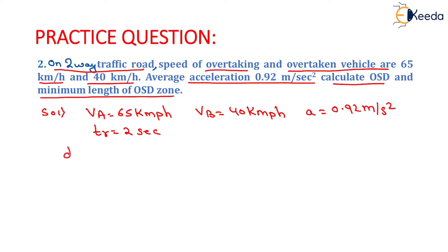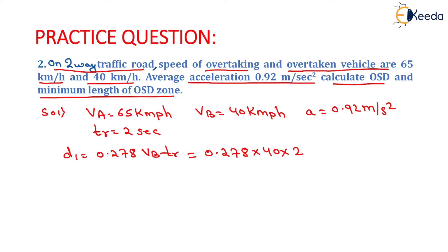We will compute the value of D1 which will be equal to 0.278 × VB × TR. On putting the values — VB is 40 km per hour and TR is 2 seconds as per the Indian Road Congress — on solving this, we will get the value of D1 as 22.24 meters.